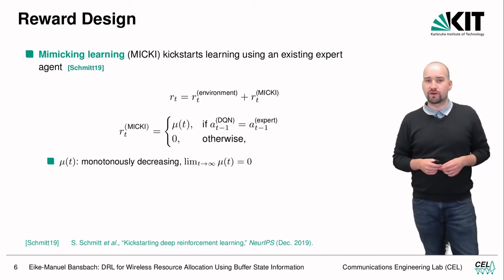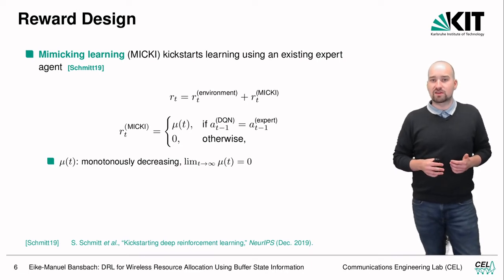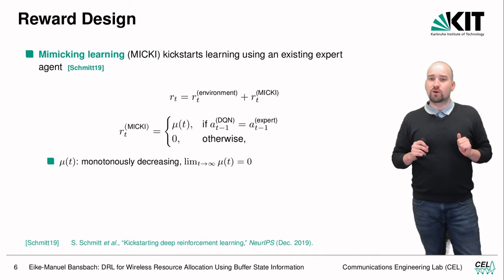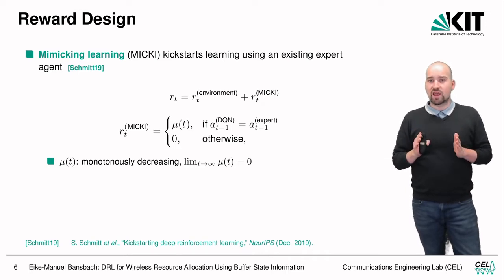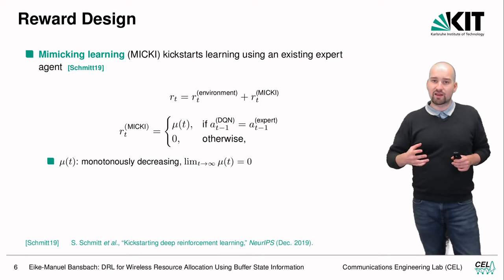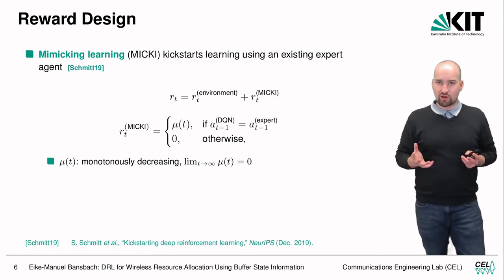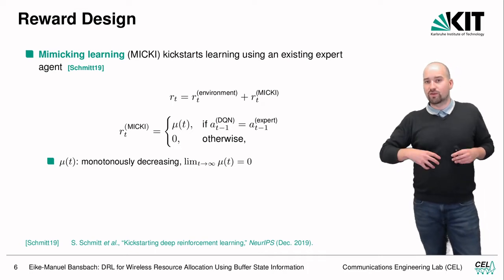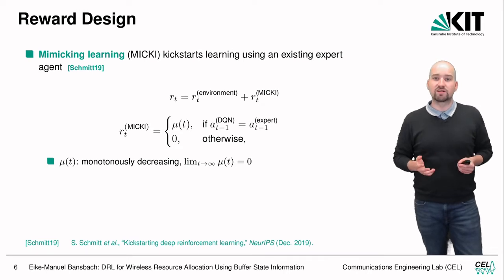To kick-start learning, motivated by Schmidt19, we introduced MICI — mimicking learning. The reward of our agent is the sum of the environment reward, which is met when traffic requirements for every user equipment are satisfied, plus a MICI reward. For MICI, an expert agent runs in parallel, and if both agents choose the same action, our agent gets an additional reward. This additional reward decreases with training time, so the agent initially borrows the expert's knowledge, then gradually detaches and explores the state space independently.